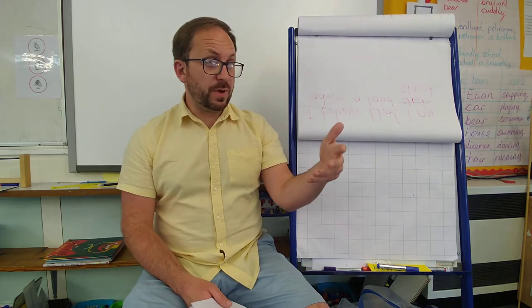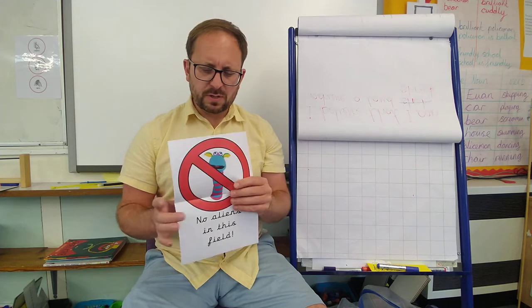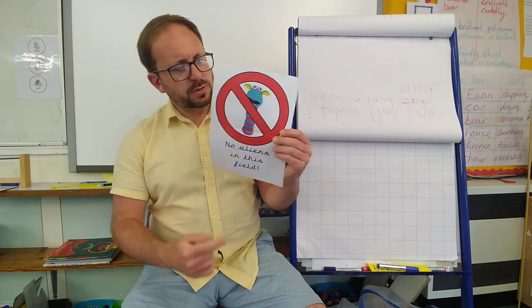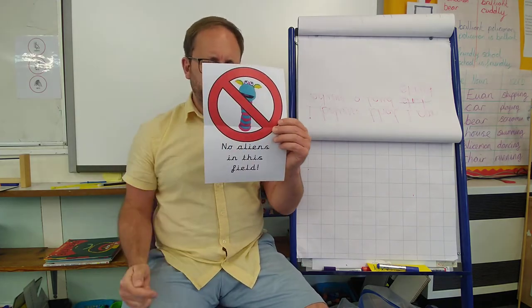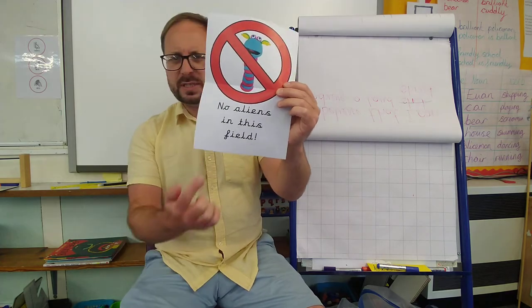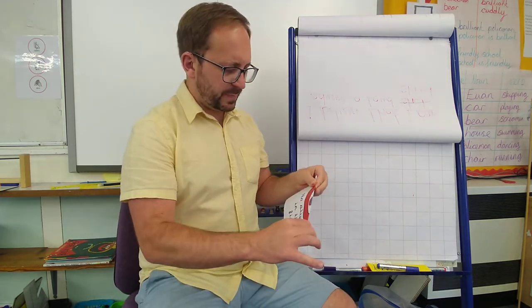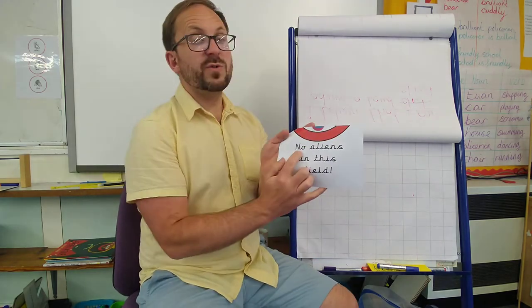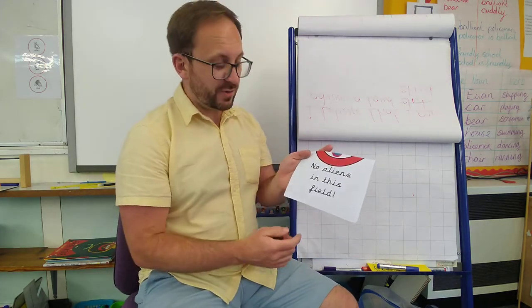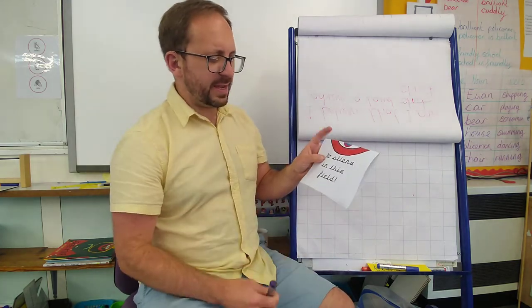But they got to the field where they were going and there were some posters up, and the poster has really confused him. It's got a picture of an alien and a big cross for it. Can you read what it says at the bottom? Because this is the bit that was confusing him. Let me get it up here. We all know that that says 'no.' Now, I thought it said 'aliens.'